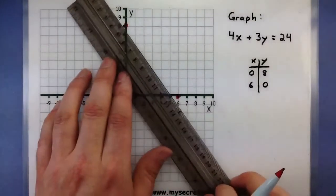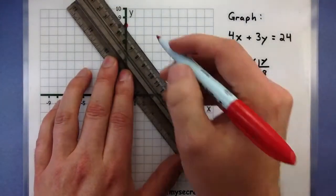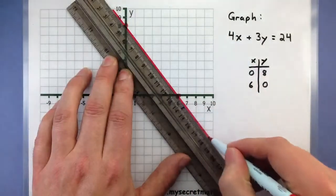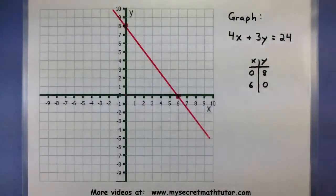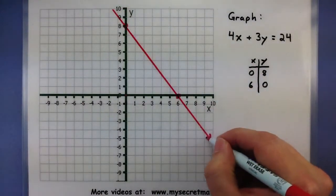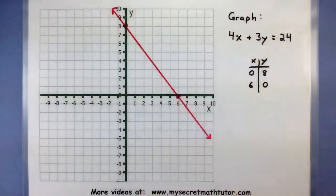Now that we have two points, we can go ahead and connect those together. And there you go, there's the graph of the line. Nice, simple, and quick, just like that.